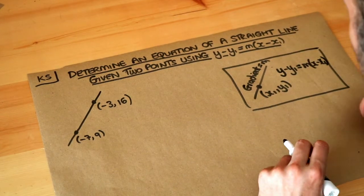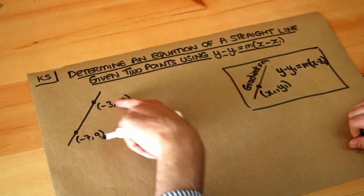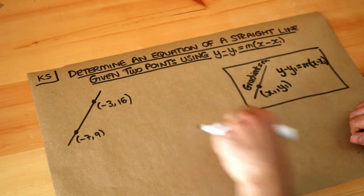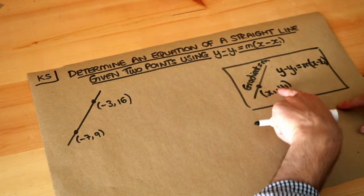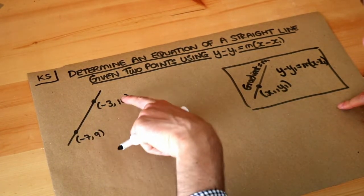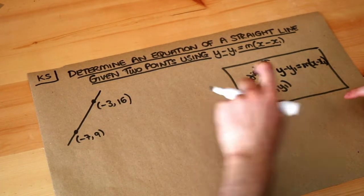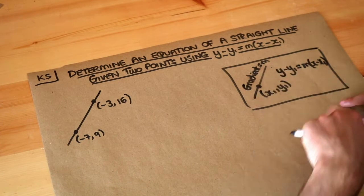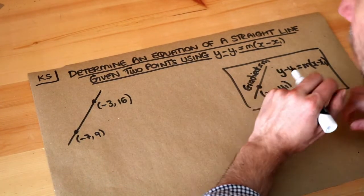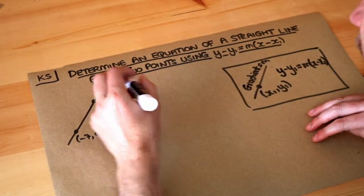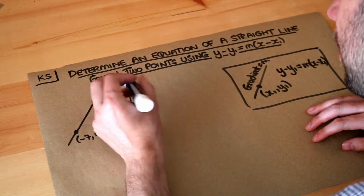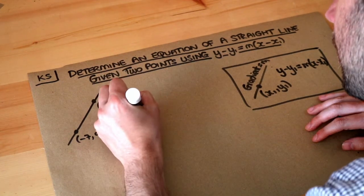Let's apply that to this problem. We've got two points. We need to know a fixed point of the line — we could use either one — and we need to know the gradient. We don't currently know the gradient, but we have a formula for finding the gradient of a line using two points, as seen in a previous video.